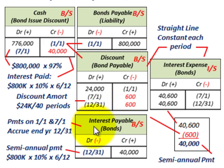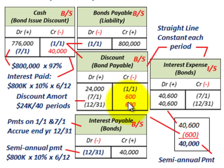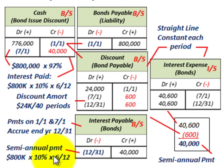At year-end 12/31, because we're not actually paying interest until 1/1, we accrue interest payable — crediting it on the balance sheet for $40,000. We also credit discount on bonds payable for $600, and debit interest expense for $40,600. The interest payable of $40,000 is $800,000 times 10% over six months, accrued because the cash payment isn't due until 1/1.